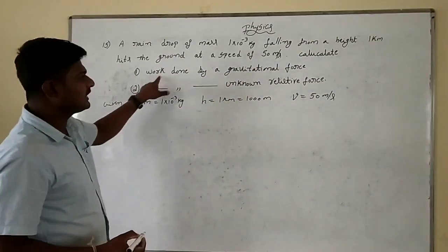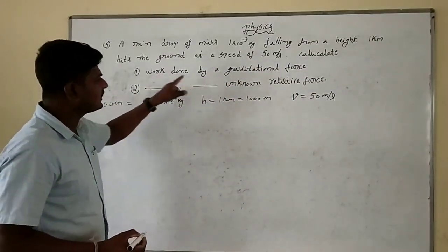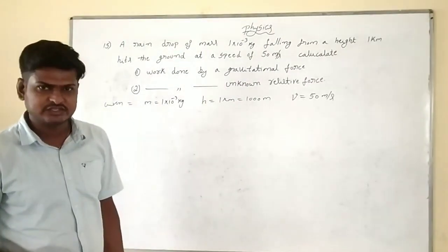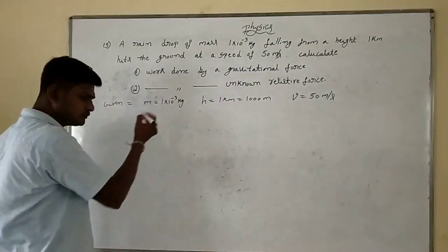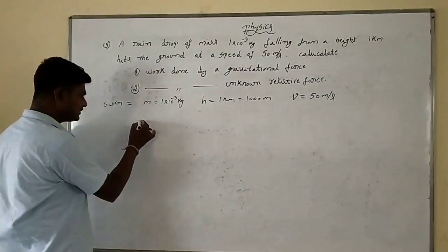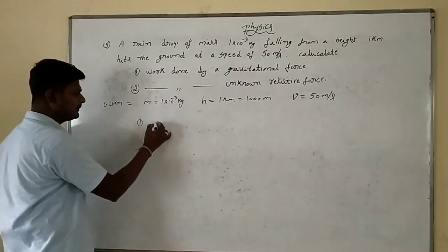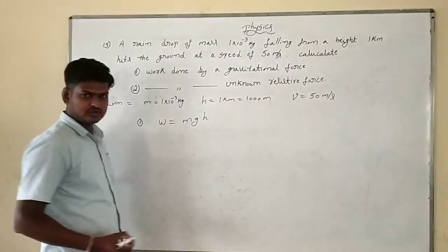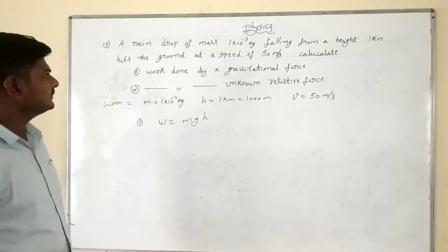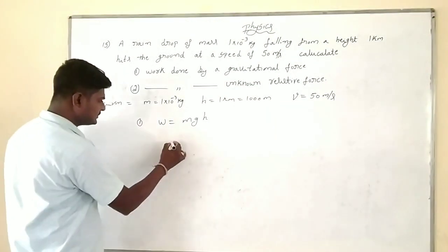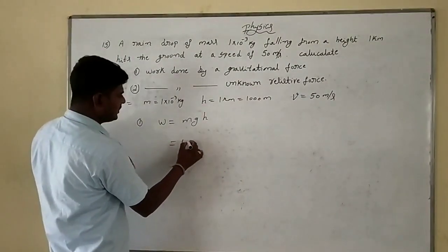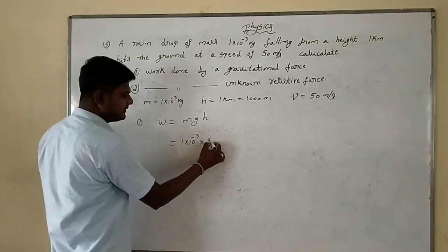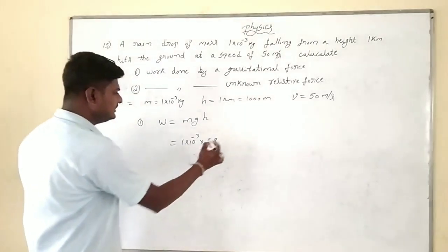Calculate: work done by the gravitational force, and work done by the unknown resistive force. Work done by the gravitational force means: work done W is equal to mgh. m is 1×10⁻³ kg, g is 9.8 (or roughly 10).